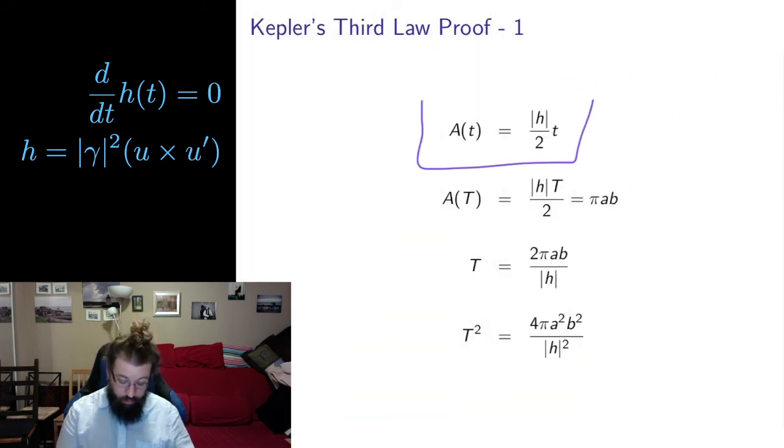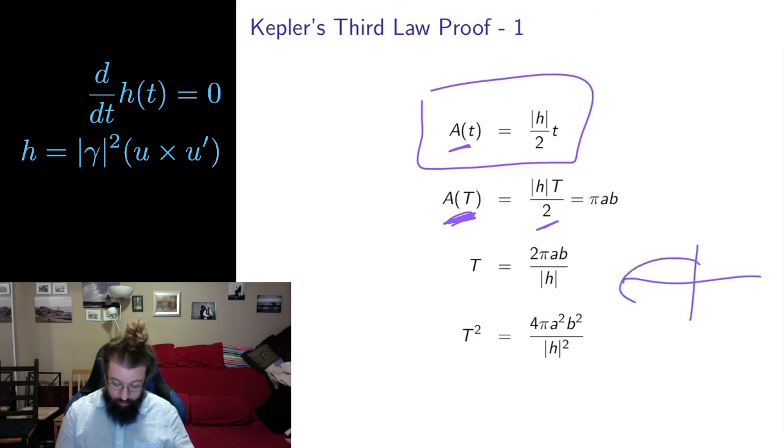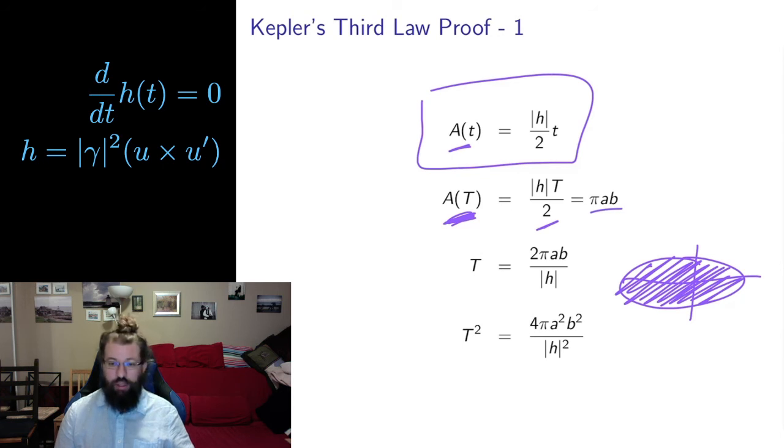Let's try and prove this. I'm going to start with the integral of the last line of the previous proof. The last line of the previous proof said the derivative of A was one-half |h|. If I integrate both sides of this and take a starting value of zero by choosing my position well, then I say that the area in terms of time is |h|/2 times t. And the area in terms of a whole period, so capital T is a whole period, so this is the area for one whole revolution, will then be |h| times T over 2. But a whole revolution is going to go around the whole ellipse. So this area for a whole period is going to give me the whole area of the ellipse, and the area of an ellipse is π times the product of the minor axis b and the major axis a.